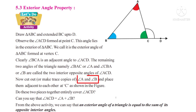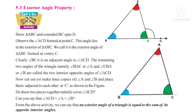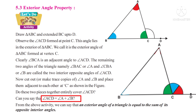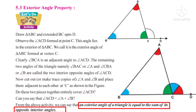Now, cut out angle A and angle B. First, cut the trace of angle B shown in blue color and place it adjacent to angle C shown in green color. Then cut angle A and place it adjacent to the blue color. Observe that the blue and red colors — that is angle A and angle B — together entirely cover the external angle ACD. So, angle ACD is equal to angle A plus angle B. From this activity, we can say that an exterior angle of a triangle is equal to the sum of its opposite interior angles.